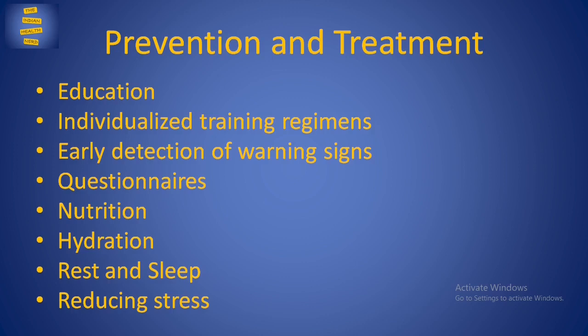Other simple measures that athletes can use to detect overtraining are weight, morning heart rate, and maximal heart rate. Weight measurement can give clues regarding the hydration and nutrition status of the athlete. Morning heart rate can give clues to the function of the sympathetic and parasympathetic nervous system. Overactivity of the sympathetic nervous system causes the heart rate to be higher than normal, while overactivity of the parasympathetic nervous system causes the heart rate to be lower than normal.